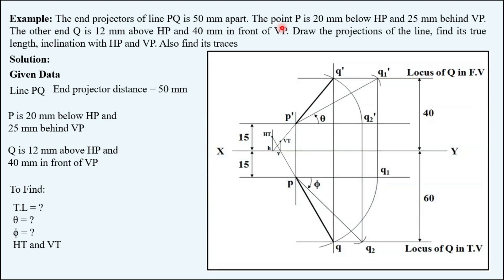Let's understand what is given by putting this data onto the solution. This solution is commonly used for a straightforward question in which the line is stated in the first quadrant. The end projector distance is given — the front view and top view of P, that is P' and P, lie on the projector of P. Similarly, Q' and Q lie on the projector of Q. The distance between these two projectors is called the end projector distance, which is 50 mm in this question.